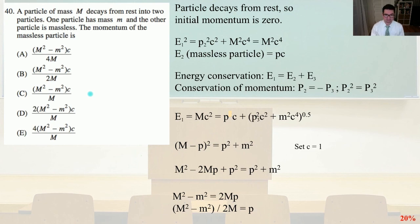So E1 squared equals P2 squared C squared plus m squared, capital M squared, C to the fourth equals capital M squared C to the fourth. So E2, the massless particle, equals PC. And that comes from, if you do E squared equals P squared C squared, take the square root of both sides, E equals PC.